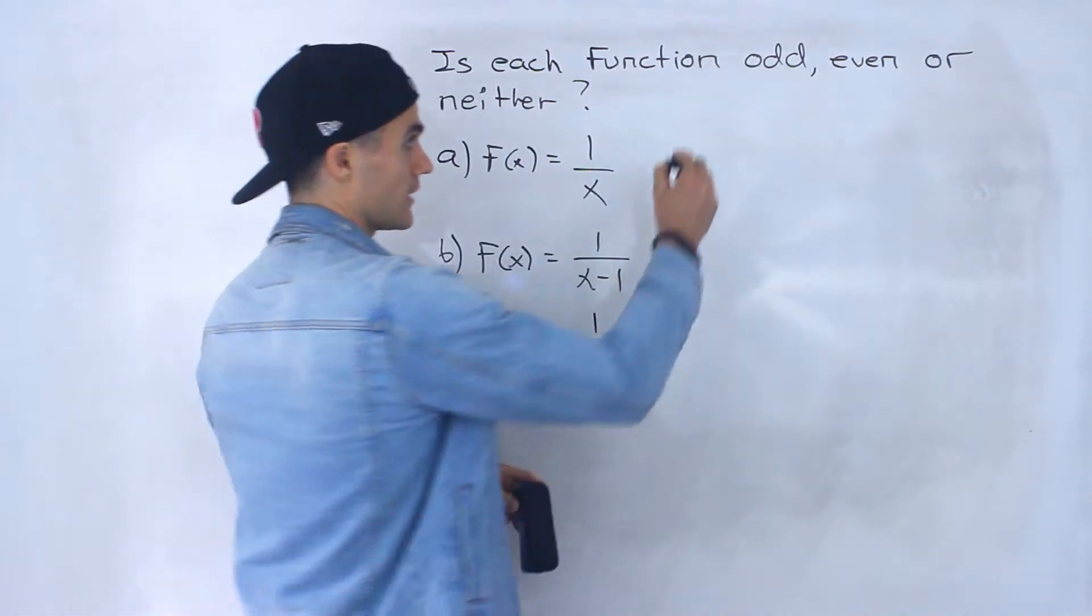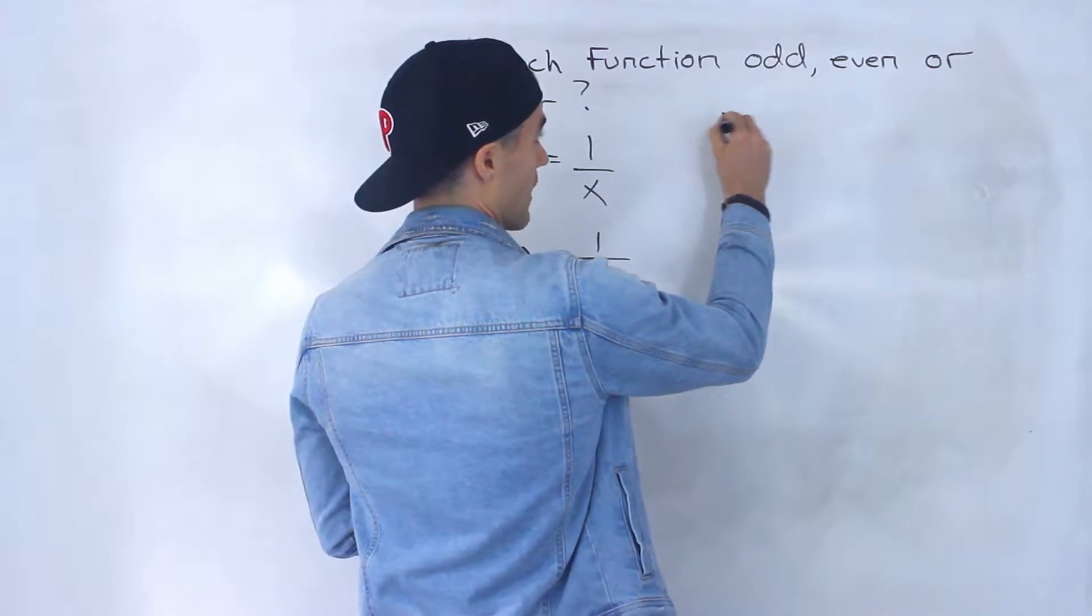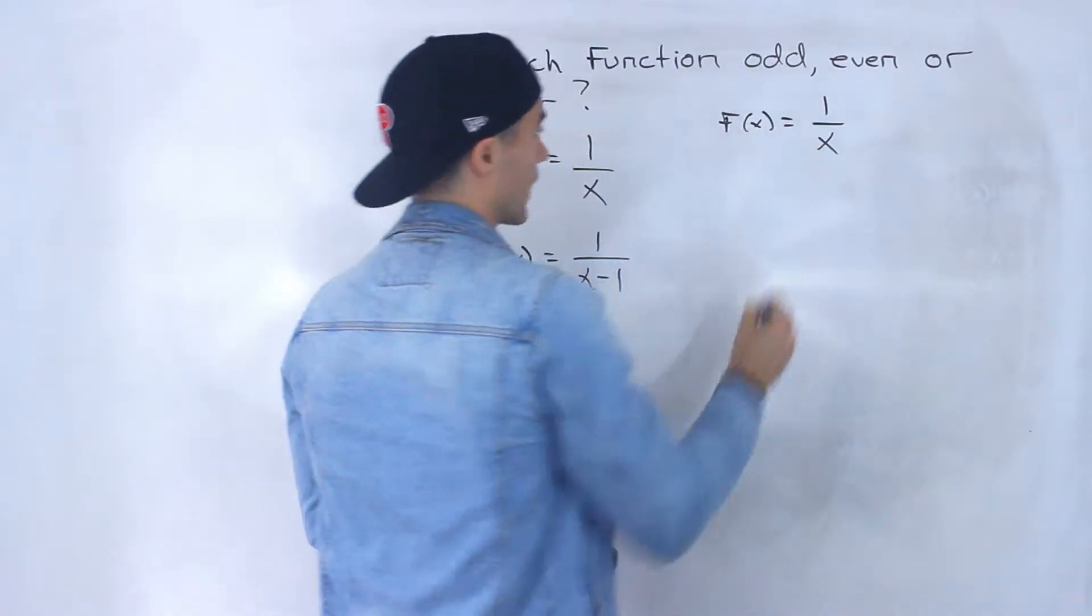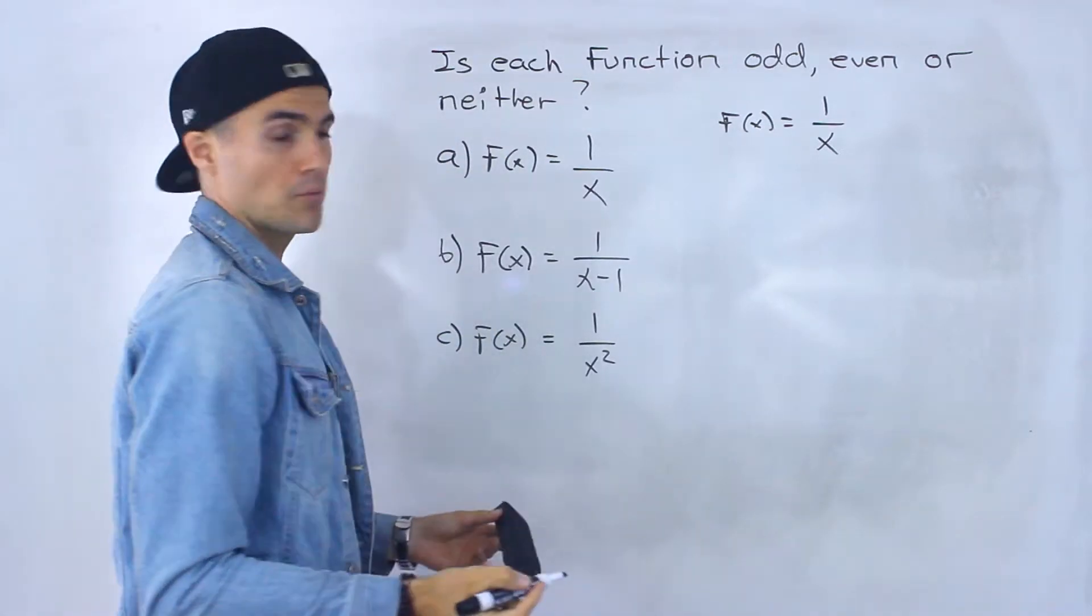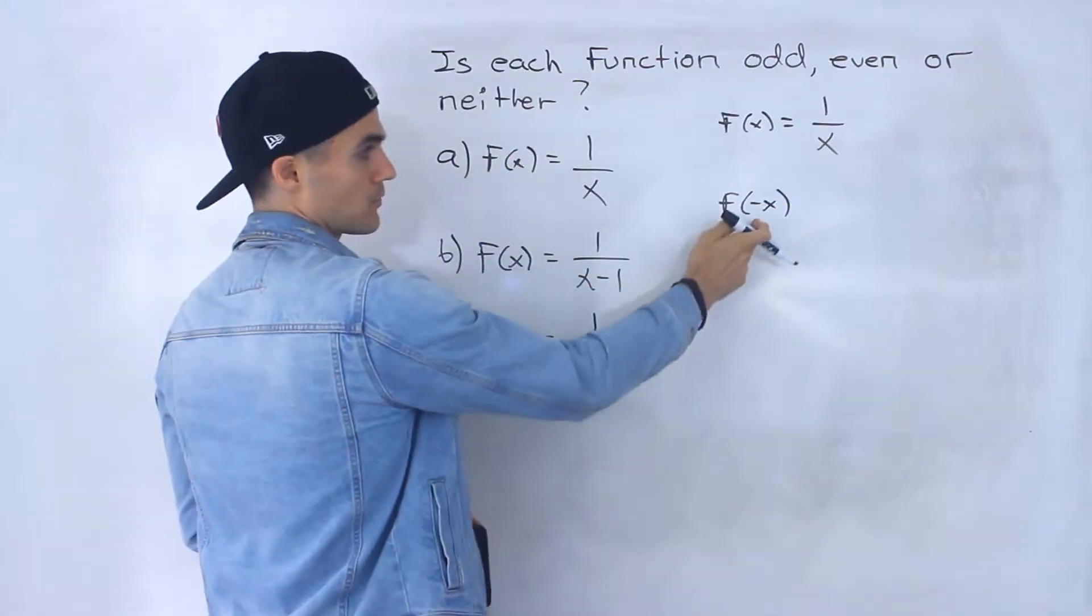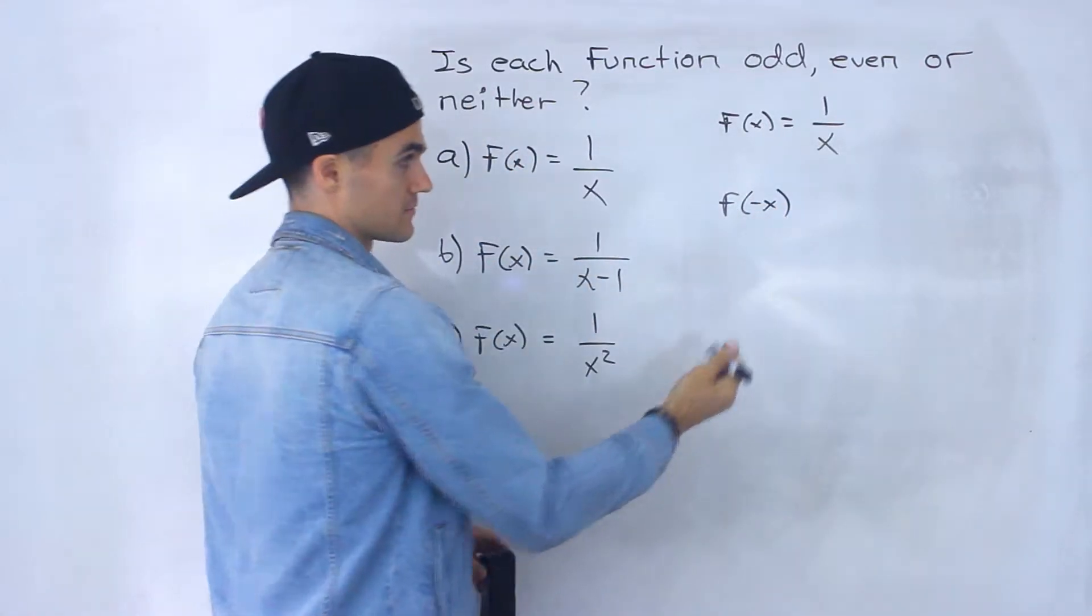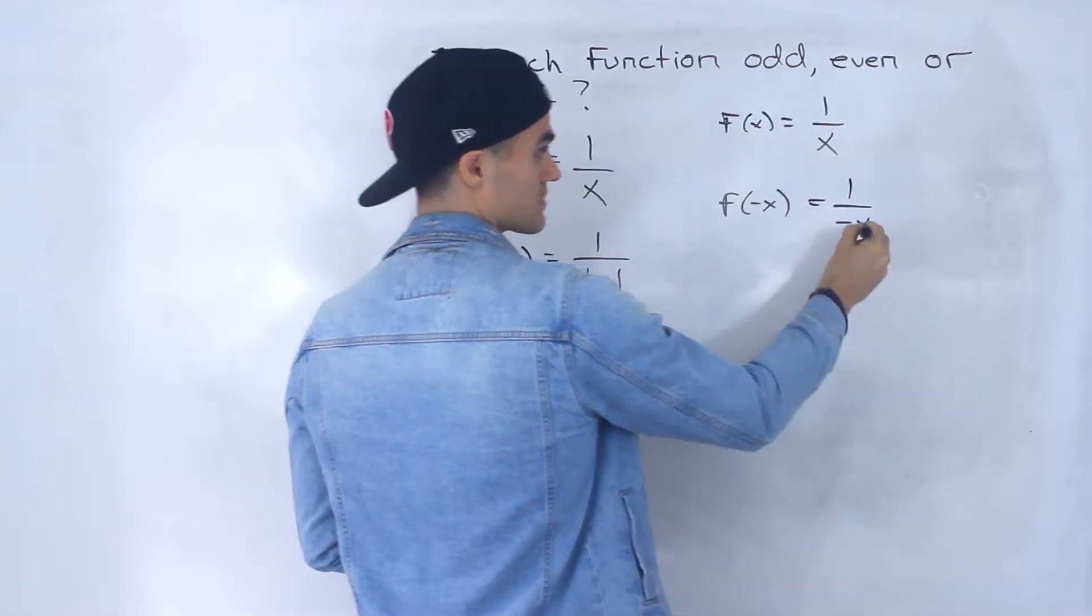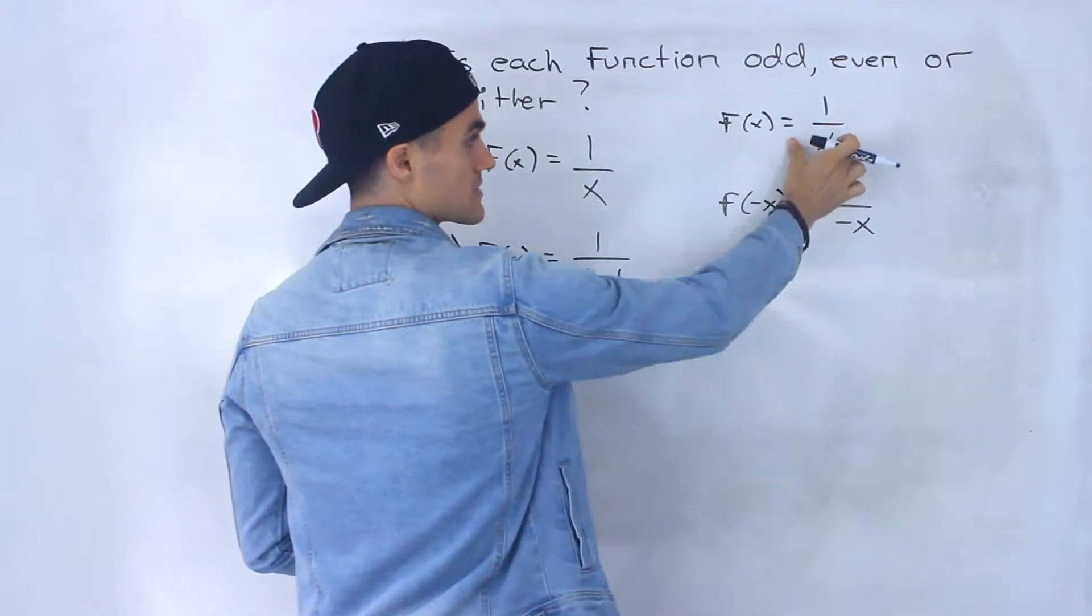So starting with part a, we got f of x equals 1 over x. So what we want to do is see what's going to happen when we have f of negative x. And so in this case, f of negative x, we would just plug in negative x for this x right here.